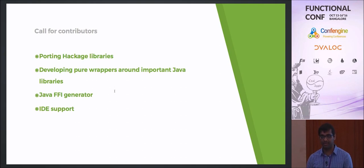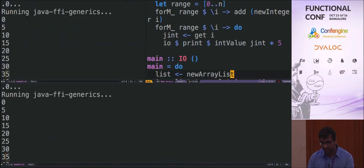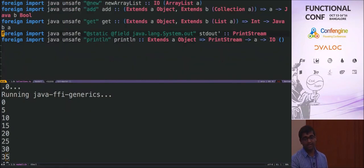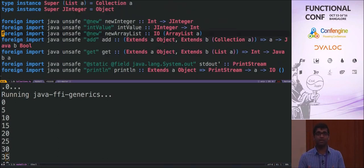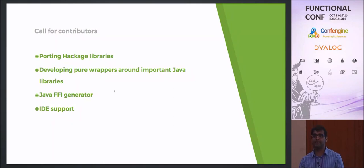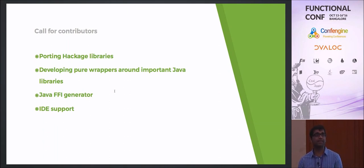If anybody is interested in contributing: we need help porting Hackage libraries, writing pure wrappers around important Java libraries like JDBC, and building a Java FFI generator. The FFI code looks complicated, but a lot of it can be machine-driven — a program can read a Java class file and figure out how to generate these signatures automatically. There's also a plugin called HaskForce for IntelliJ that works with Haskell, and I'm working with its maintainer to get this working for GHCVM as well.